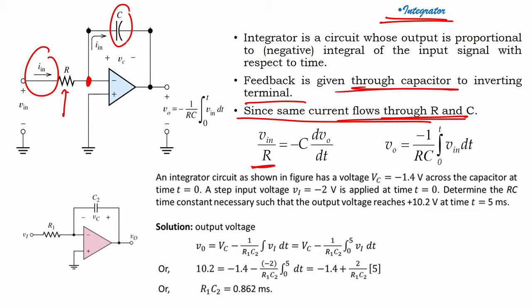If I want to measure the current at the capacitor side, then I will have minus C into dVo/dt. So to find Vo from this equation, we integrate: Vo = −(1/RC) ∫₀ᵗ Vin dt.